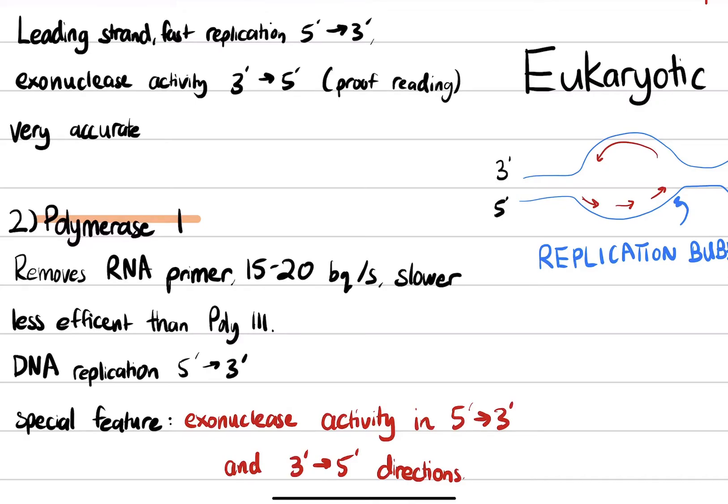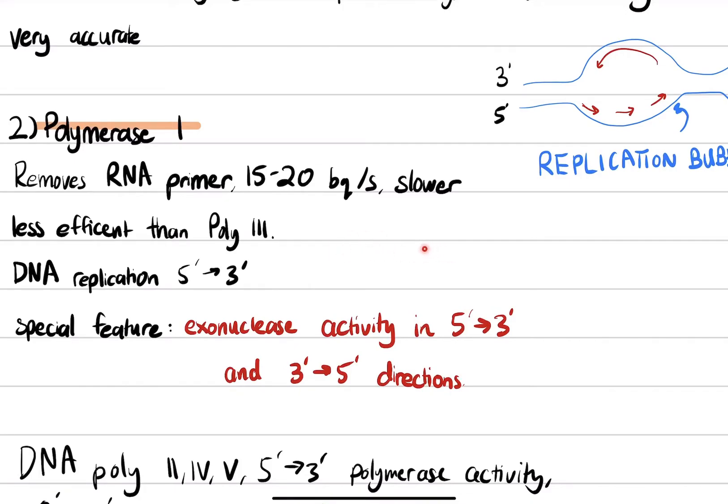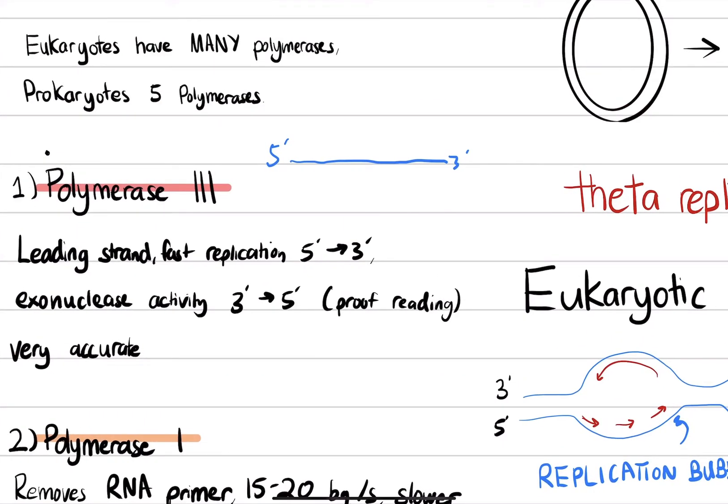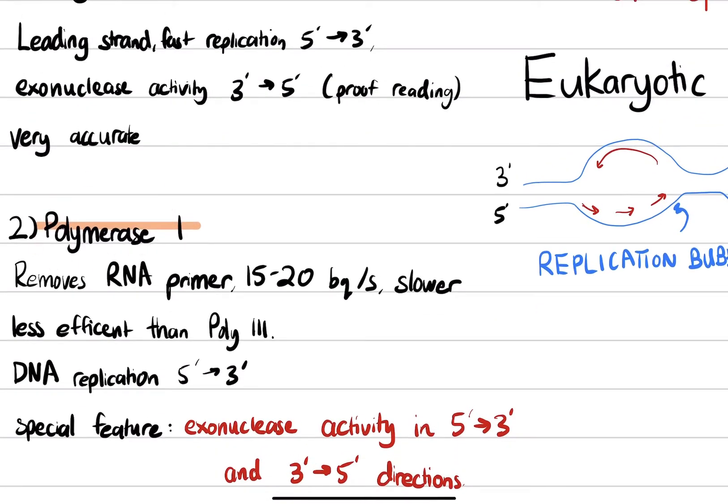Which is pretty interesting because it goes back and forth. It has the ability to, if you go back to the strand, it's just going back and forth, making sure everything is fine. It can cause exonuclease activity in both directions, which is pretty cool. And it's very unusual for a polymerase to do that, and that's the only one polymerase I that can do it.